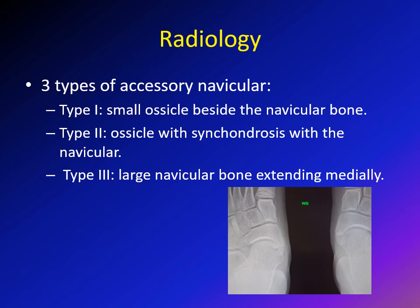X-ray of the accessory navicular will show one of three types. Type 1 is usually a small ossicle beside the navicular bone. Type 2 is the most symptomatic one in adolescents and is usually a bullet-shaped ossicle with synchondrosis over the navicular. Type 3 is a large enlargement of the navicular bone extending medially.